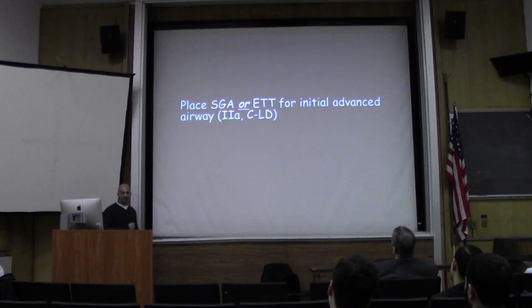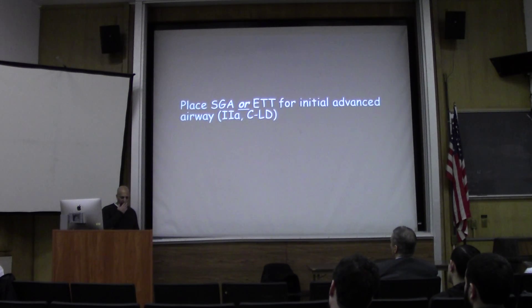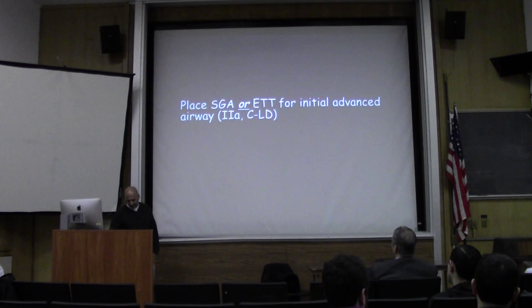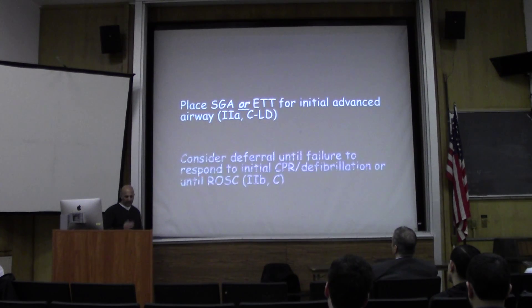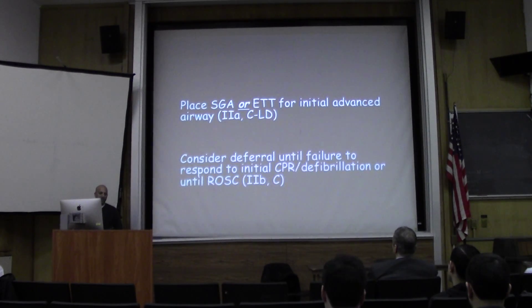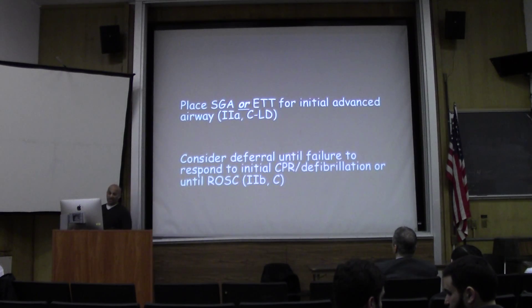The AHA says you can place either a supraglottic airway or an endotracheal tube, based on limited retrospective data. There is a study going on in Washington State — a paramedic study looking at ideal timing of advanced airway placement to maximize outcomes — comparing endotracheal tube versus the King tube in 3,000 patients. It's been completed, but we're waiting for results to get more information we can extrapolate to our emergency department patients. You can consider deferral of the advanced airway — and should for shockable rhythms — deferring until failure to respond to initial shocks and compressions, or even after successful resuscitation. This suggests you can use a BVM for the whole resuscitation — a weak 2B recommendation.